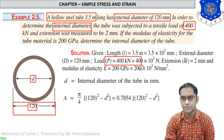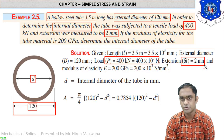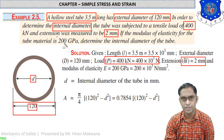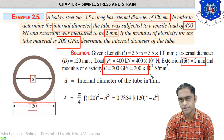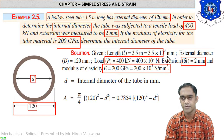The tube was subjected to a tensile load of 400 kilonewton, so P = 400 × 10³ N. The extension was measured to be 2 mm, so delta_l = 2 mm. The modulus of elasticity for the material is 200 GPa, so E = 200 × 10³ N/mm².